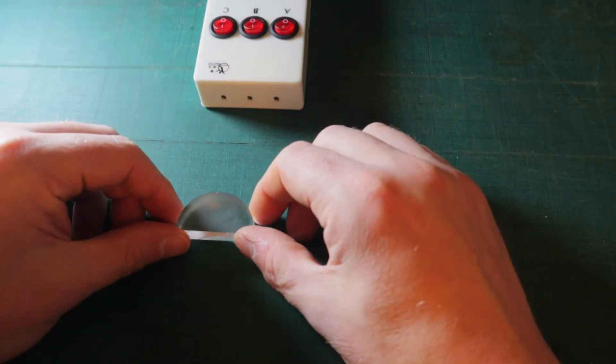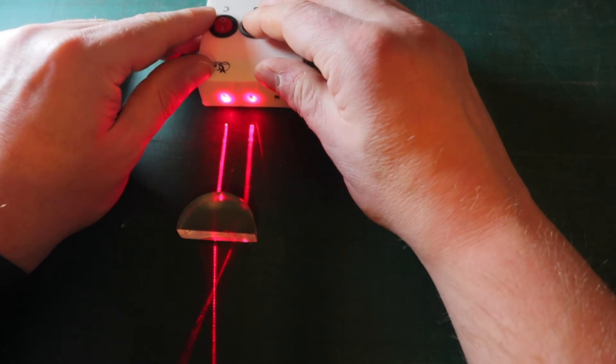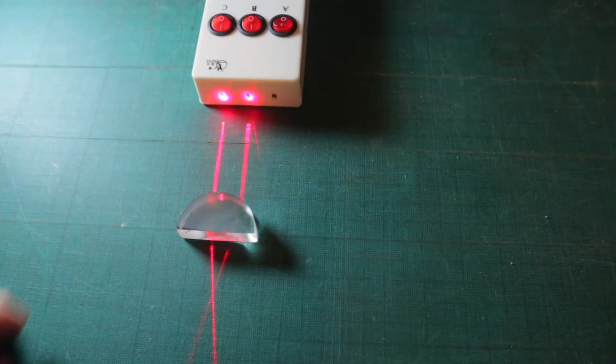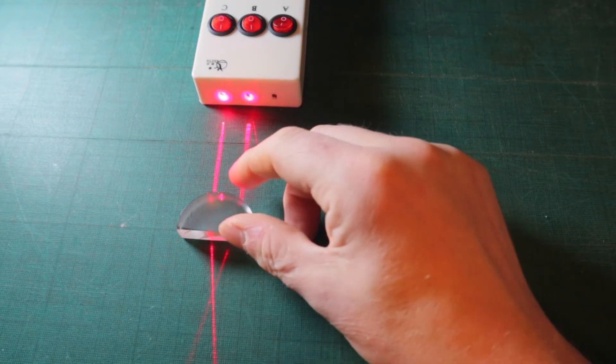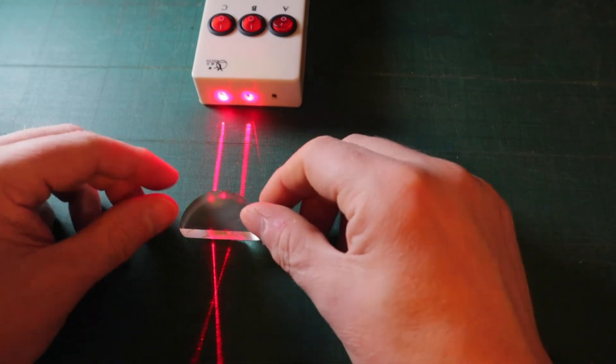So we'll place the plano-convex lens in the path of the twin laser beams, and then when we switch them on, we can see quite clearly that below the lens the beams converge. Let's just drop the light down a little there to see it better.